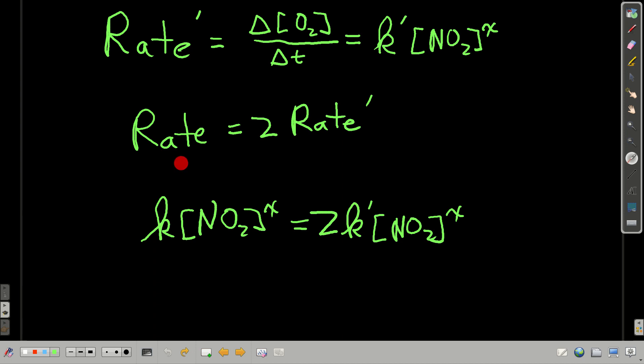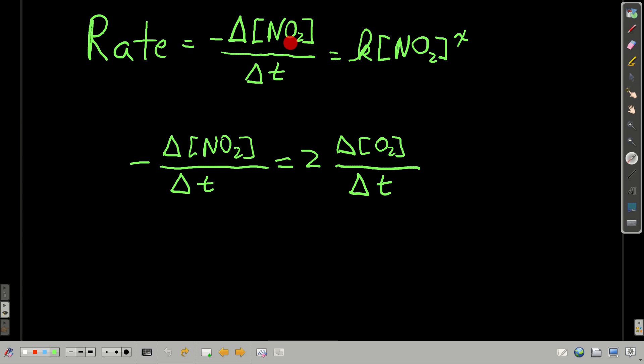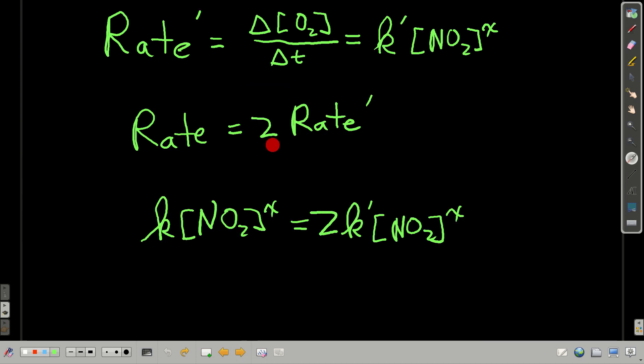So, now, the rate that we wrote initially involving negative delta concentration of NO2 over time is equal to K NO2^x. It's twice, it's the rate, if we write it in terms of the change in concentration from nitrogen dioxide, that would be twice this rate up here, which means that if we write the rate law, K NO2^x is equal to 2K prime NO2^x.